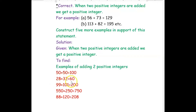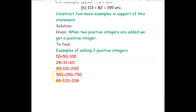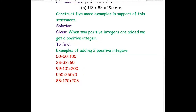Next, 99 plus 101: both are positive integers, giving positive 200. Then 550 plus 250: both positive, giving positive 800. Finally, 88 plus 120: 88 is a positive integer, 120 is a positive integer, so the result is 208, which is also a positive integer.